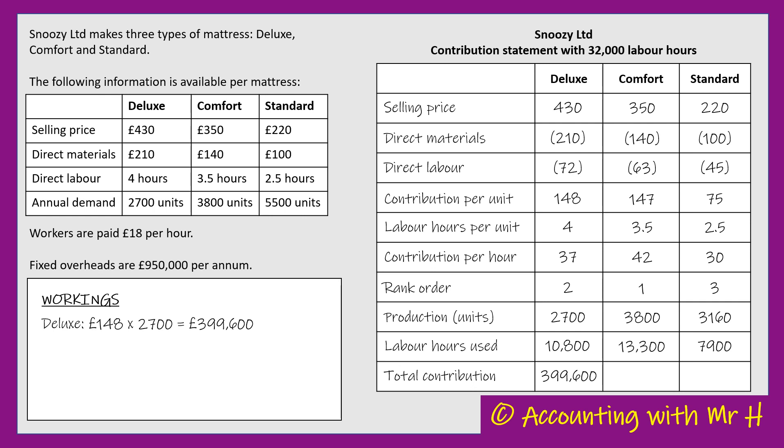The contribution per unit of a Comfort is £147, and the number of units we're going to produce is 3,800, so that's going to bring in £558,600 worth of contribution.